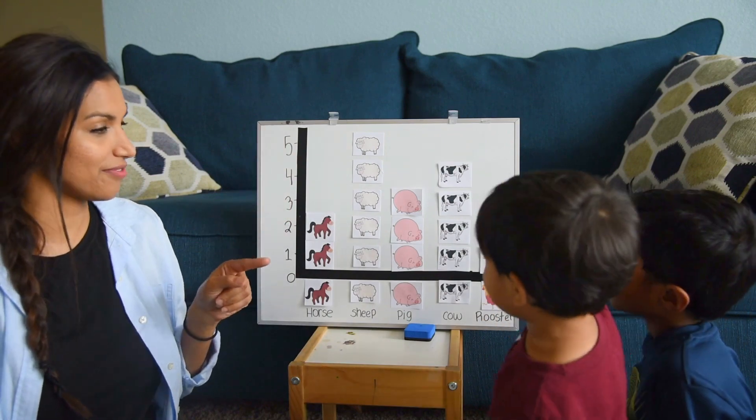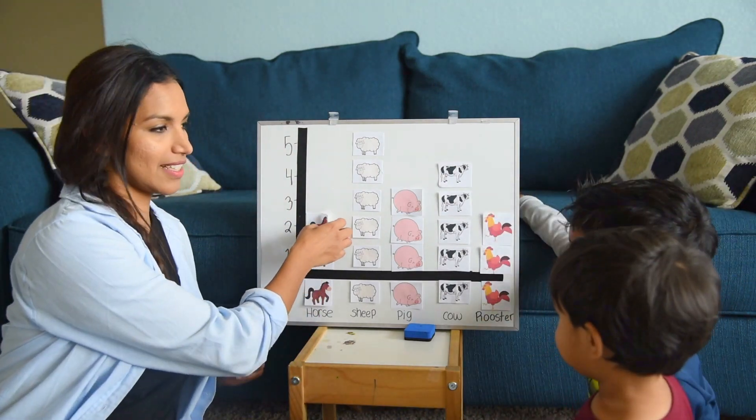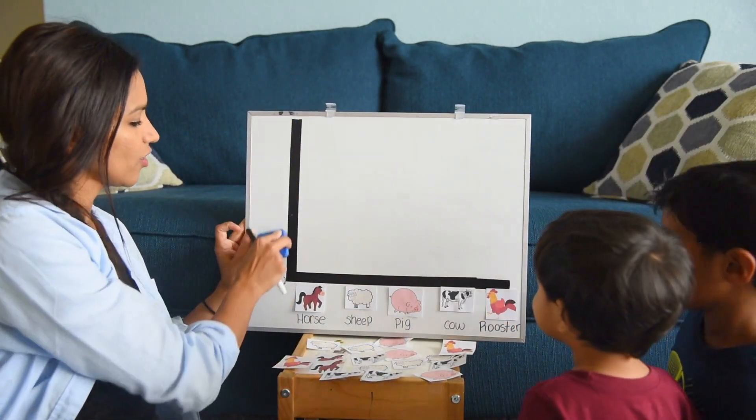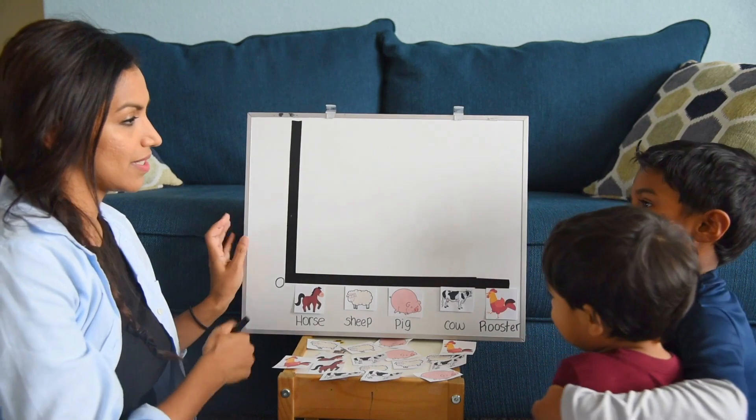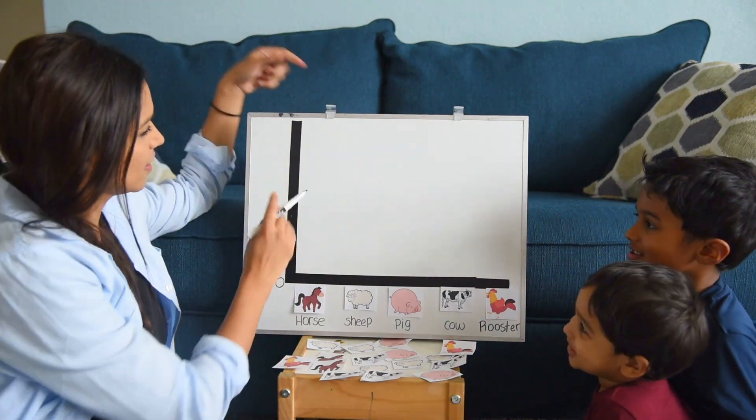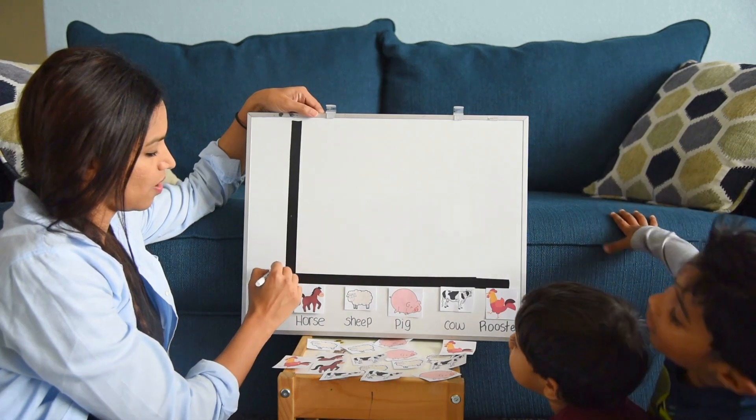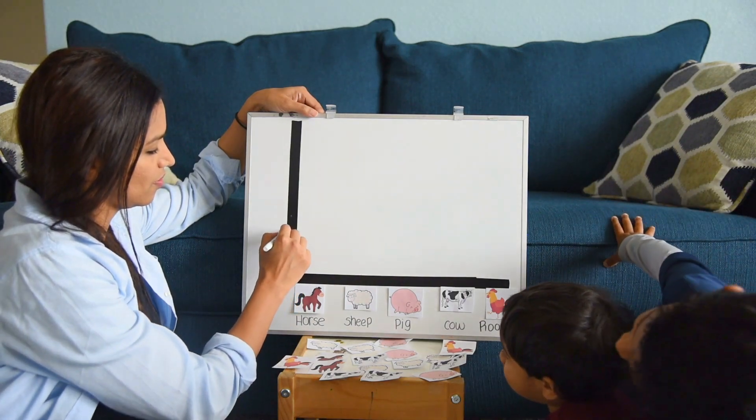Now, do you want to make your own graph? Yeah, I'll make it. So we're going to take this all out. We're going to take these numbers. Instead of counting only up to five, we are going to count by, we're going to go ahead and make it up to ten. So this is one, two, three.